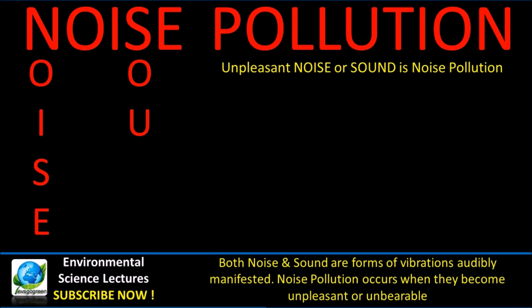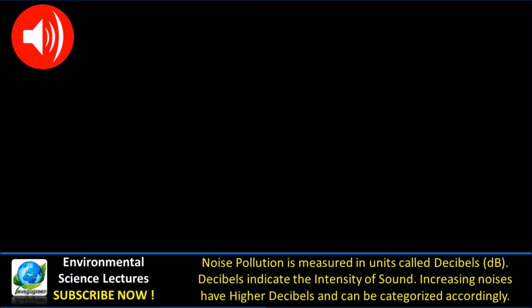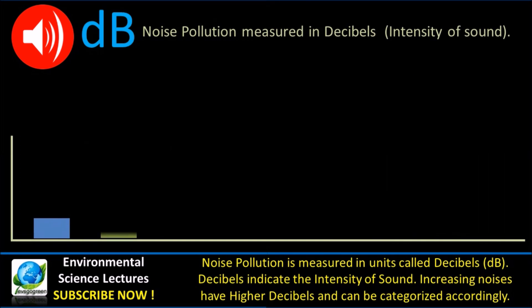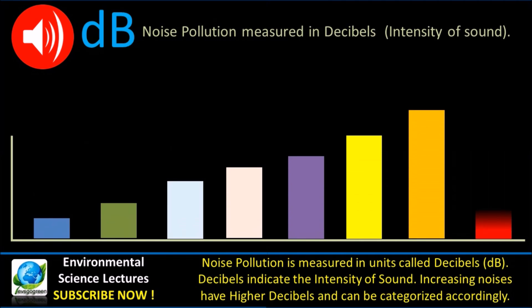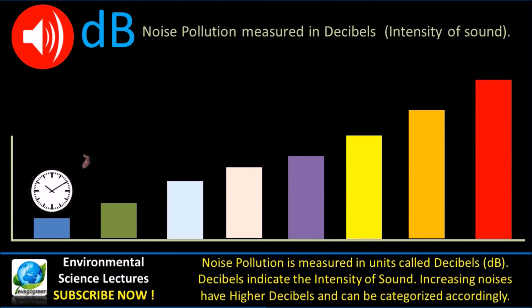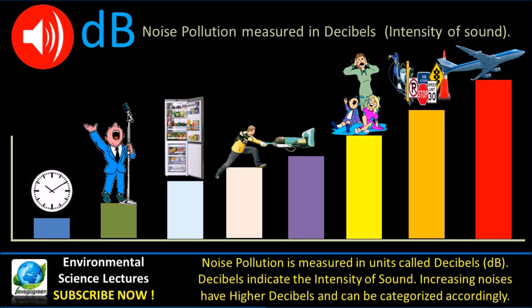Noise Pollution: Both noise and sound are forms of vibrations audibly manifested. Noise pollution occurs when they become unpleasant or unbearable. Noise pollution is measured in units called decibels, which indicate the intensity of sound. Increasing noises have corresponding higher decibels and can be categorized accordingly.